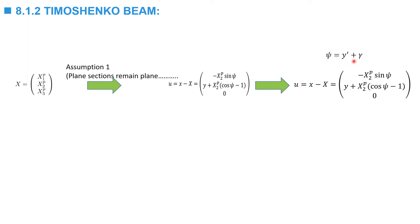The displacement then, when we replace y prime plus gamma with psi, can be written as a function of the cross-sectional rotation psi. Assuming small deformations, sine psi is equal to psi and cosine psi is equal to one, we can then simplify this relationship as shown.